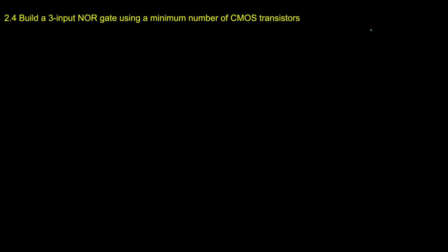This question is asking: build a 3-input NOR gate using a minimum number of CMOS transistors. CMOS consists of PMOS and NMOS transistors. For a NOR gate you have to put PMOS in series and NMOS in parallel. For a NAND gate you have to put PMOS in parallel and NMOS in series — that is opposite.